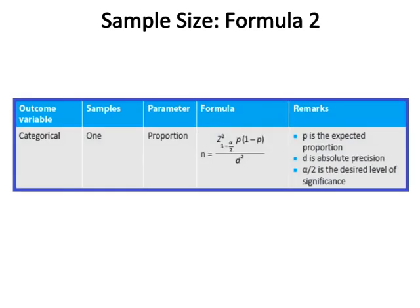Sample size formula two: the outcome variable is categorical, the sample is one, and the parameter is proportion. The formula is n = (Z_(1-α/2))² × p(1-p) / d², where p is the expected proportion, d is absolute precision, and (1 - α/2) is the desired level of significance.